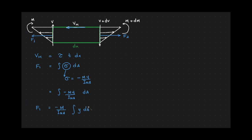Similarly, the resultant of the differential forces integrated over the right end of the segment, which shall be called f2, f2 is also equal to integral sigma dA, and again, sigma is, of course...